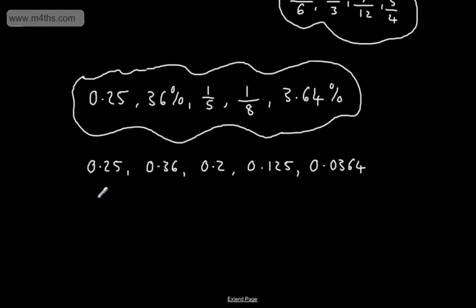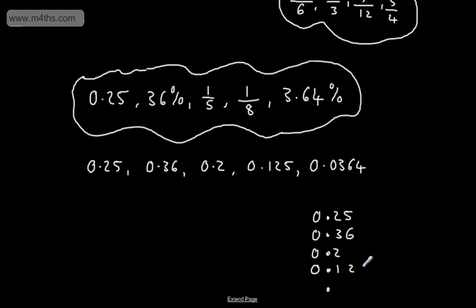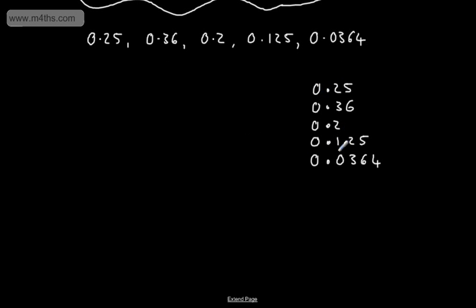So all I need to do now is put these in order. You can use the place value chart again, or simply do it by observation. Looking at the decimals — 0.25, 0.36, 0.20, 0.125, 0.0364 — we can see clearly 0.0364 is the smallest as it has a 0 in the tenths column. The next smallest is 0.125, then 0.20, then 0.25, and then 0.36 is the largest.